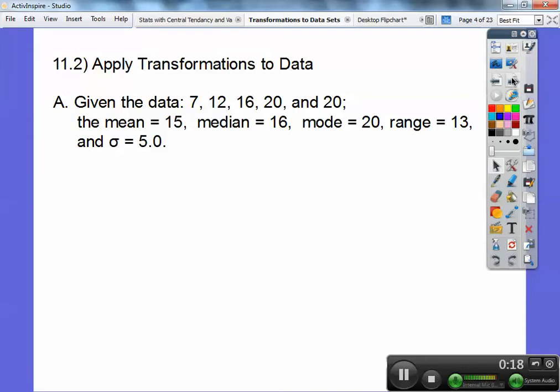So given the data 7, 12, 16, 20, and 20, the mean of that data I've calculated for you is 15, the median is 16, the mode is 20, the range is 13, and the standard deviation is 5.